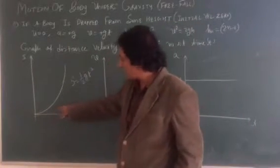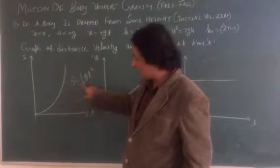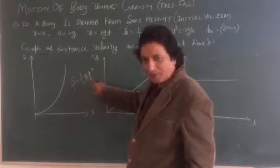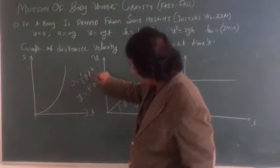It is parabolic in nature. Half g is constant, t is variable. It is of the nature y equal to k x square.